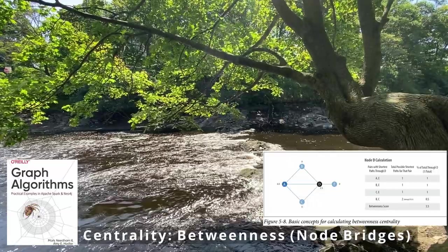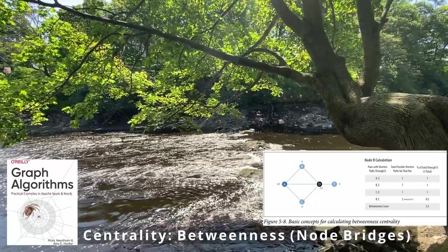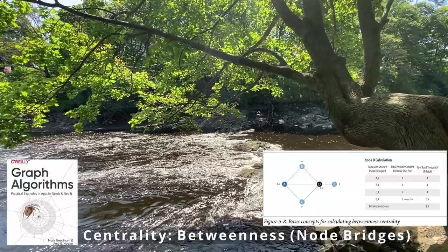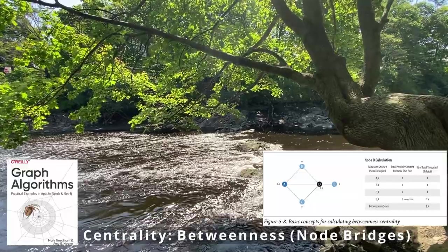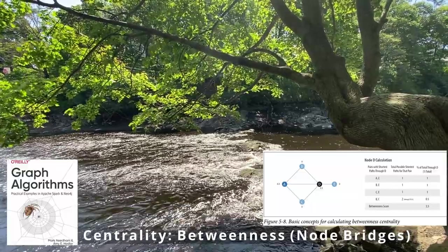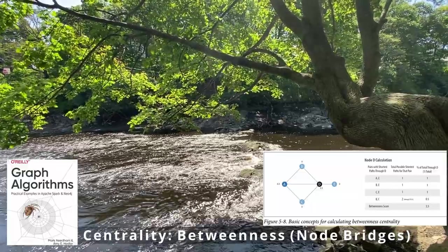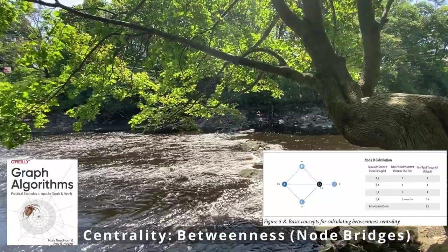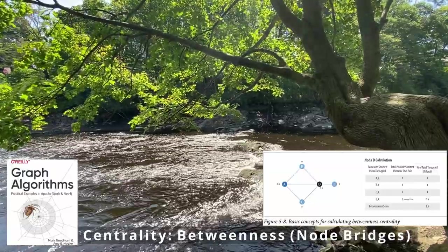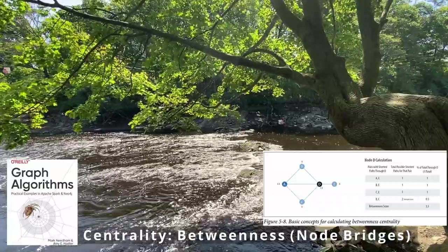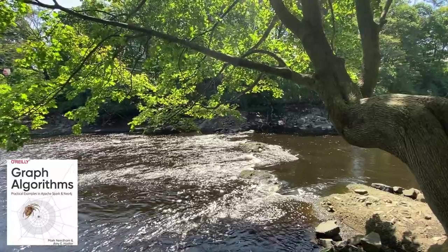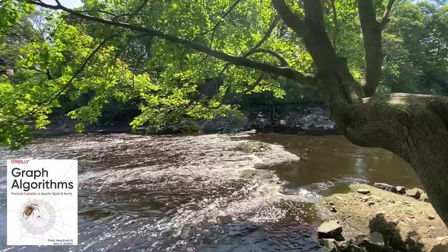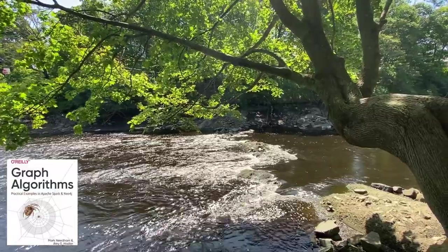Once you understand those bridge nodes, that's where you understand there is either a risk, an influencer, or something you just need to pay attention to so that you don't have holes in your graph if something were to happen to that node. Now I'm going to kick off the community detection part of this video, but then David is going to take it over from there.